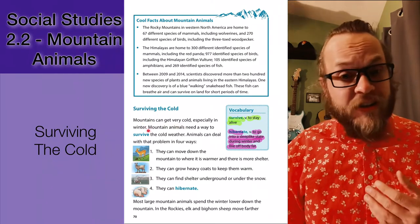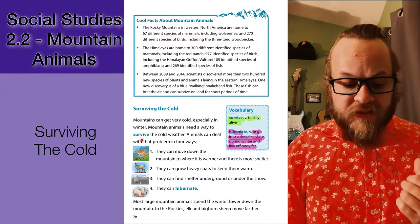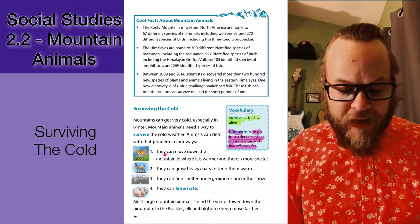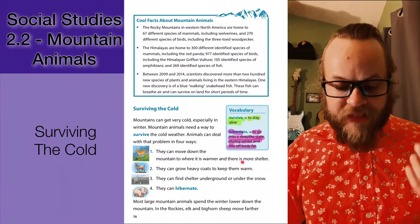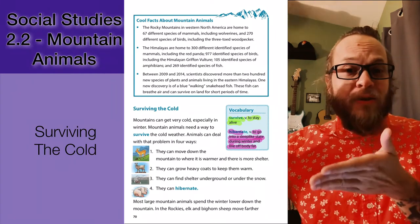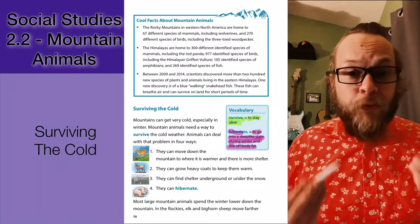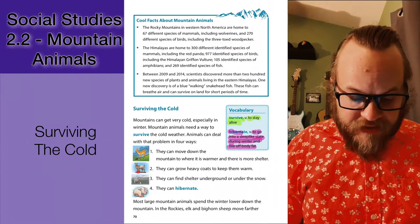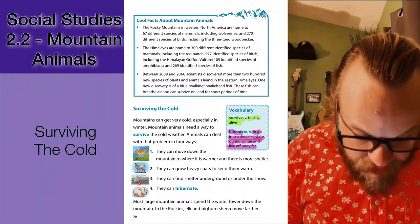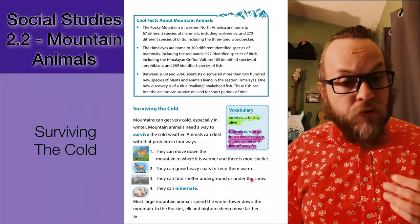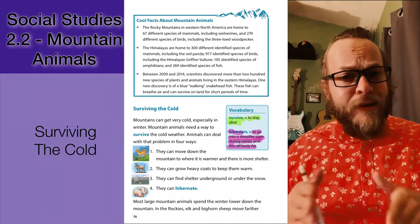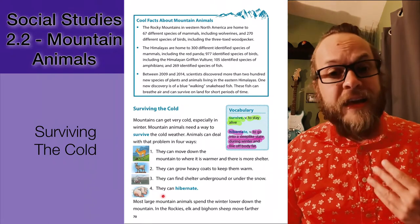Surviving the cold: mountains can get very cold, especially in winter. Mountain animals need a way to survive the cold weather. Animals can deal with that problem in four ways. A deer can move down the mountain to where it is warmer and there is more shelter — during summers they go to the cooler peaks, and during winters they move down to avoid the heavy snowfall. Like these goats, they can grow heavy coats to keep them warm. Like these gophers, they can find shelter underground or under the snow, digging down and making a cave where it stays the same temperature all year long. Or, like bears, they can hibernate.